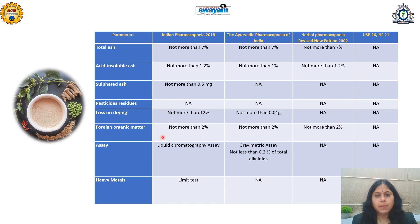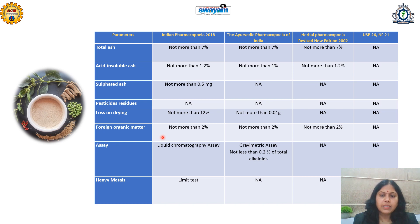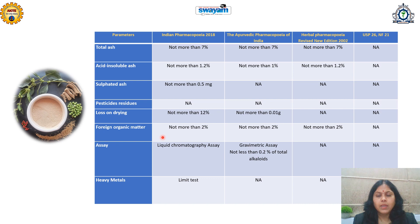Assay determines the percentage purity of the drug. In the Indian Pharmacopeia, assay is performed by liquid chromatography — generally HPLC — while in the Ayurvedic Pharmacopeia, a simple gravimetric assay method is mentioned. The content in the Indian Pharmacopeia is referenced according to withanolides or withaferins. For heavy metals, the Indian Pharmacopeia suggests performing a limit test to determine the concentration of lead, arsenic, and other toxic metals, whereas such tests are not mentioned in the Ayurvedic Pharmacopeia or Herbal Pharmacopeia.